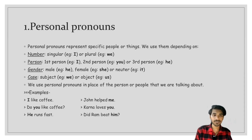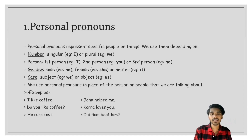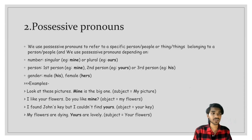In case of subject or object, we use 'we' and 'us'. Examples of personal pronouns: 'I like coffee', 'Don't help me', 'Do you like coffee?', 'Karna loves you', 'He runs fast', and 'Did Ram beat him?' In these examples, I, you, he, me, you, and him are personal pronouns.